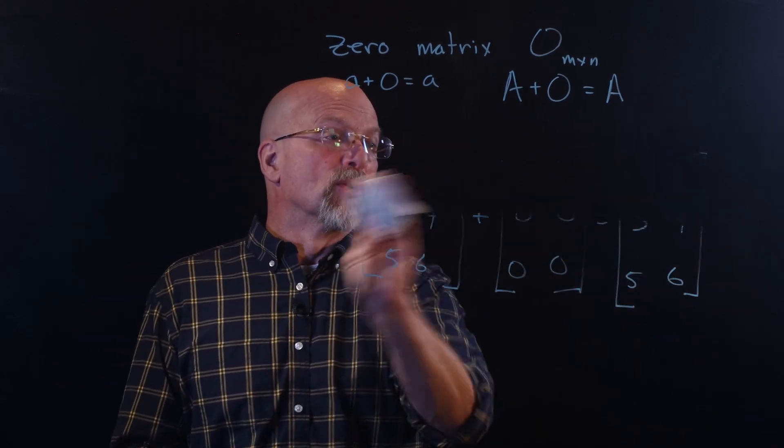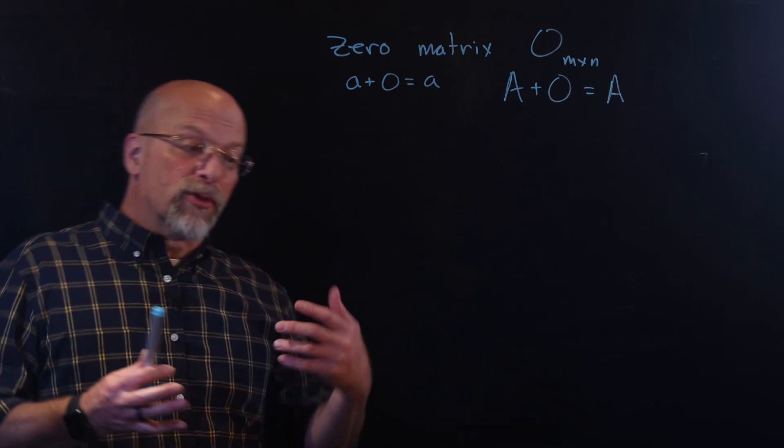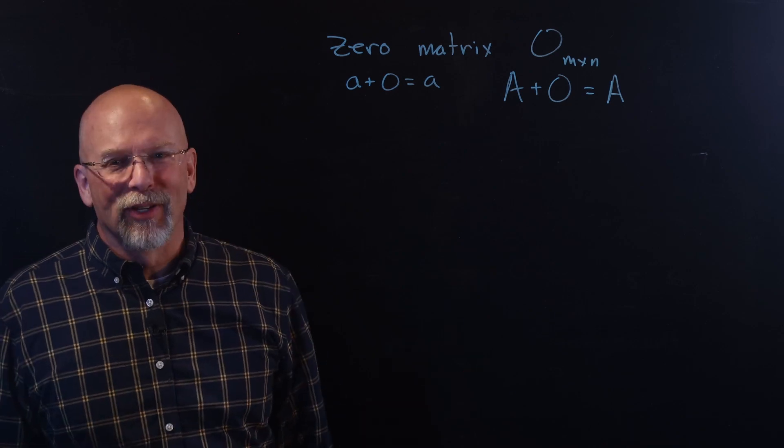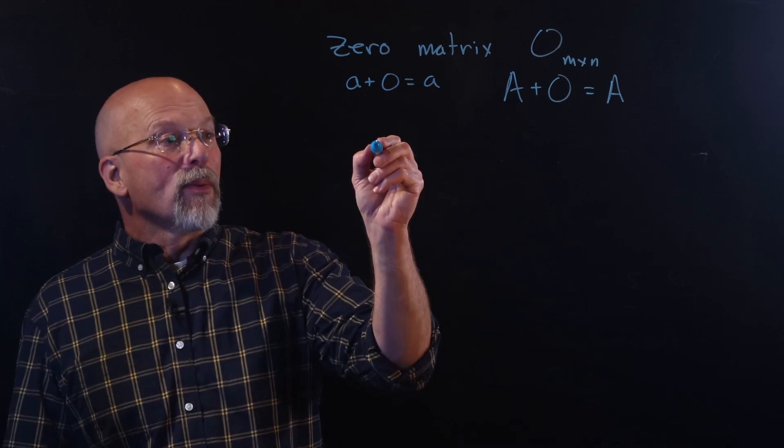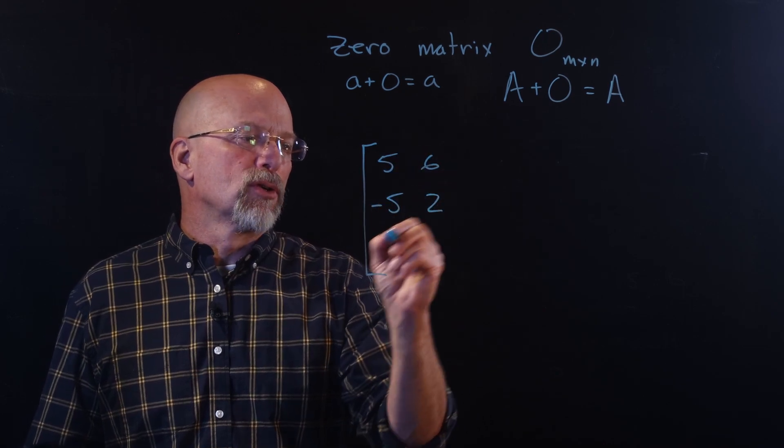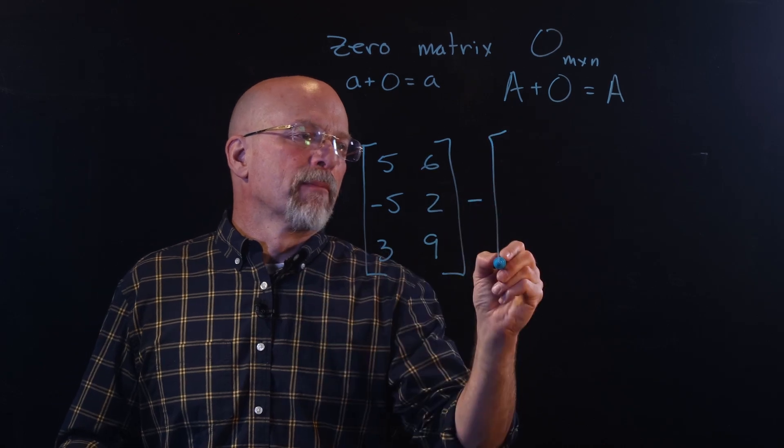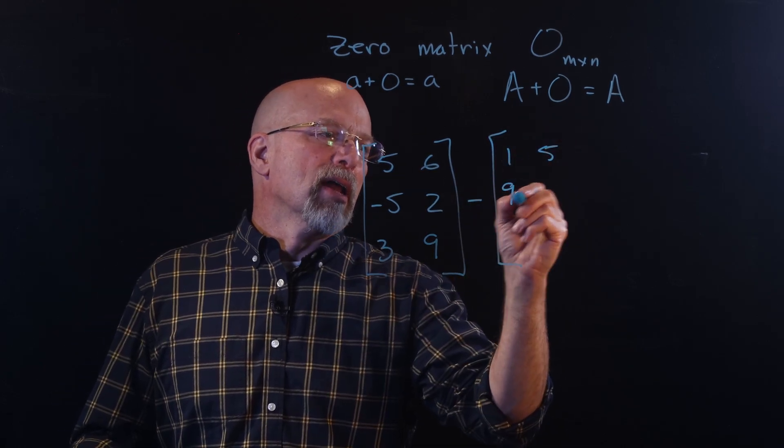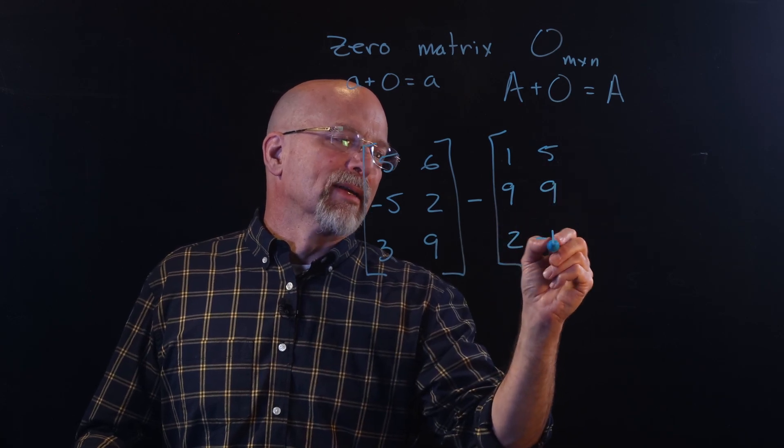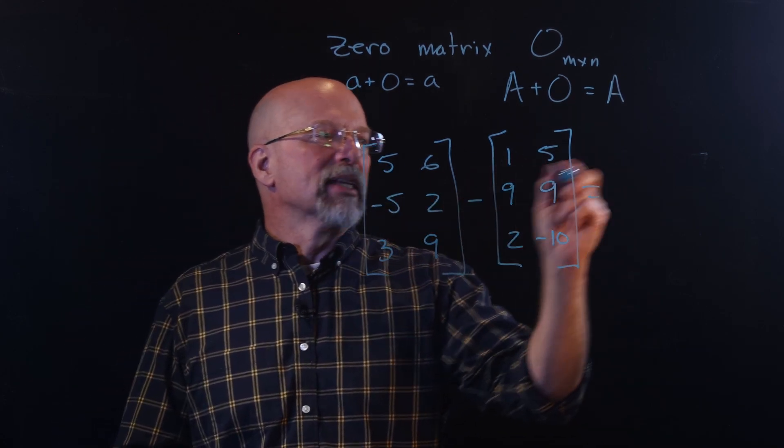By the way, subtraction works too. You just have to make sure that you subtract each element of the minuend matrix from the corresponding element of the subtrahend matrix. Yeah, I always have to look those terms up too. But what we've got for an example, we've got 5, 6, negative 5, 2, 3, and 9, and we're subtracting 1, 5, 9, 9, 2, negative 10.